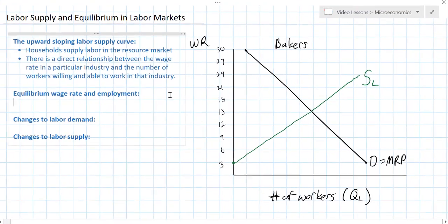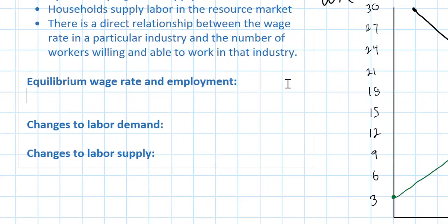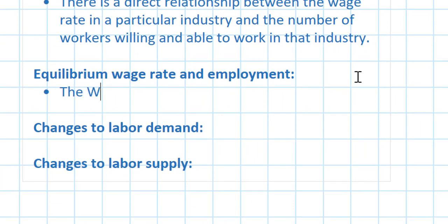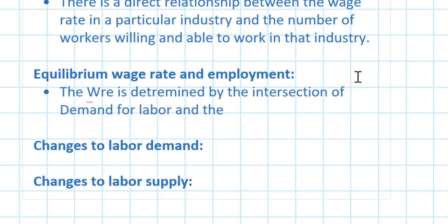Now that we understand why there is an upward sloping labor supply curve, we can pretty easily see how to find the equilibrium wage rate in a particular industry. The wage rate is simply the price of the resource labor. Therefore, the equilibrium wage rate — we'll call this WRE — is determined by the intersection of the demand for labor and the supply of labor.